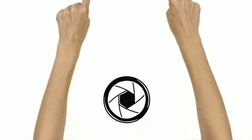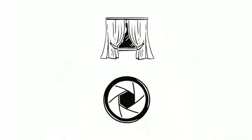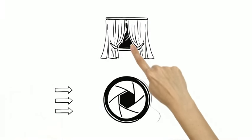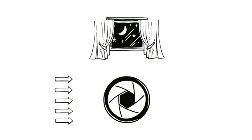Imagine the aperture as a pair of curtains. It controls the amount of light entering the lens. When it's dark, Mary wants to capture as much light as possible. To do that, she needs to open the aperture wider.